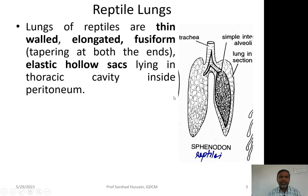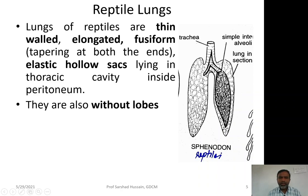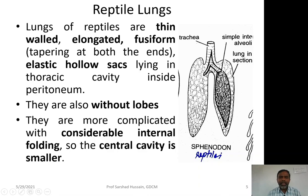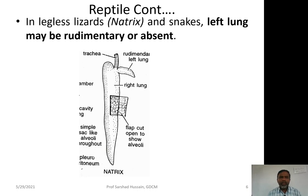The lungs of reptiles are thin-walled, elongated, and fusiform — meaning both ends are tapering. They are elastic and hollow sacs lying in the thoracic cavity inside the peritoneum. They are without lobes, like the amphibians, but more complicated, having developed folding of the inner wall along the whole length of the lung, resulting in a much smaller central cavity occupied by alveoli.